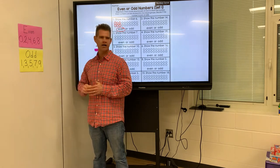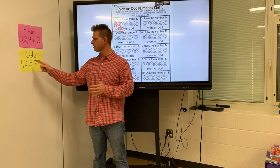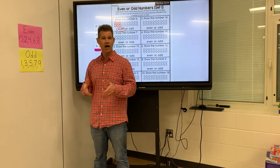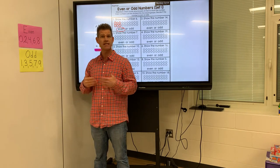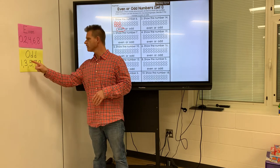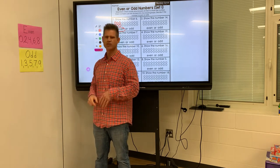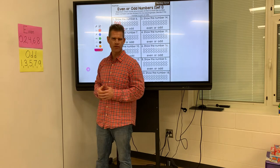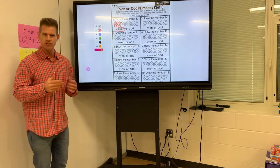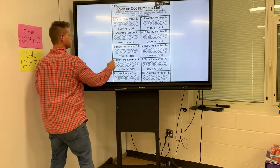Here's a chant for what odd numbers end with. One, three, five, seven, nine are the odd numbers. Let's say them one more time: one, three, five, seven, nine. Those are a couple of little rhymes and chants that you can do at home to practice so that you can remember.